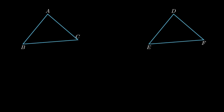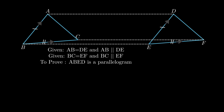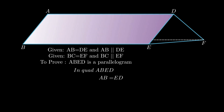The next problem states: in triangles ABC and DEF, AB is equal and parallel to DE, and BC is equal and parallel to EF. Vertices A, B and C are joined to vertices D, E and F respectively. We need to show quadrilateral ABED is a parallelogram. In quadrilateral ABED, AB is equal and parallel to ED, so opposite sides are equal and parallel. Therefore ABED is a parallelogram.